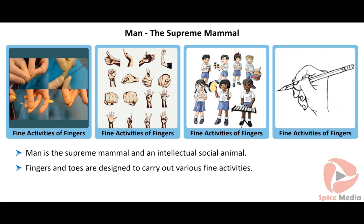Man is the supreme mammal and an intellectual social animal. Fingers and toes are designed to carry out various fine activities like writing, holding delicate items, playing fine instruments, etc.